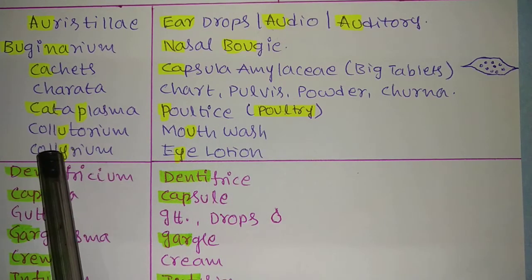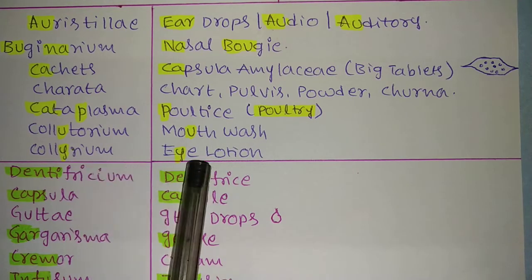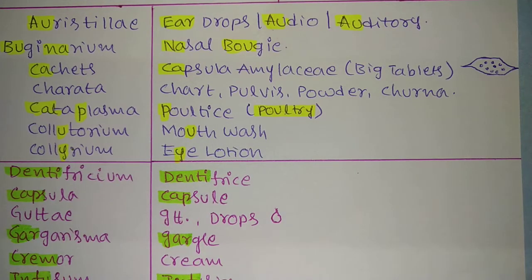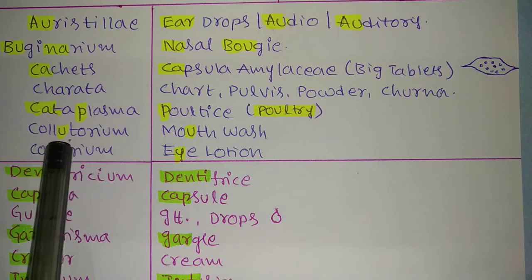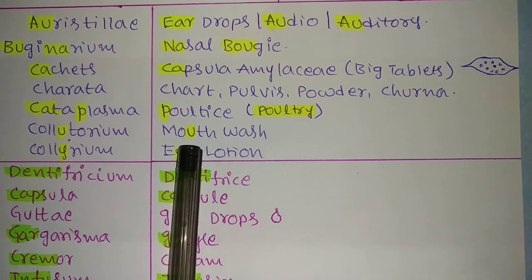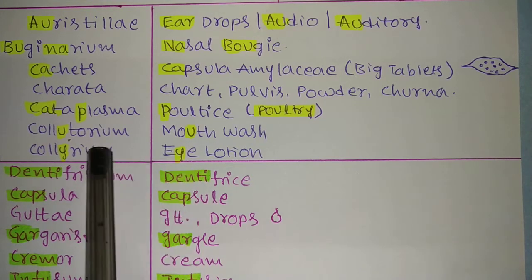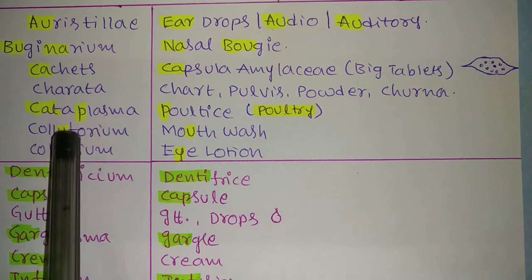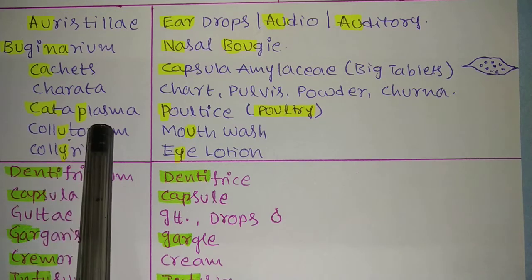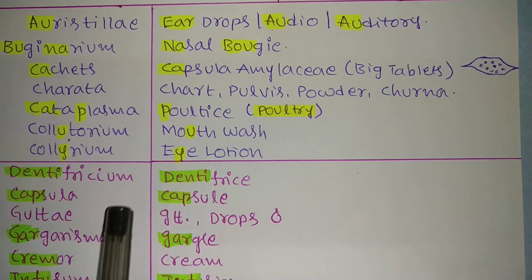Next is 'Collutorium,' which is a mouthwash, and 'Collyrium,' which is an eye lotion. There is a chance of confusion between the two, so here is a trick: 'Collutorium' contains a U — and in the mouth you can find a U shape. 'Collyrium' contains a Y — and the eye shape resembles Y. Catch this U or Y and you can determine whether it is a mouthwash or an eye lotion.